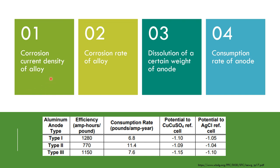If one wants to know how to select a particular anode, it is good practice to go back to a few publications which talk about how the Tafel plots of those particular alloys or similar composition alloys look, so that one may take into account the chemistry while selecting the anode type.